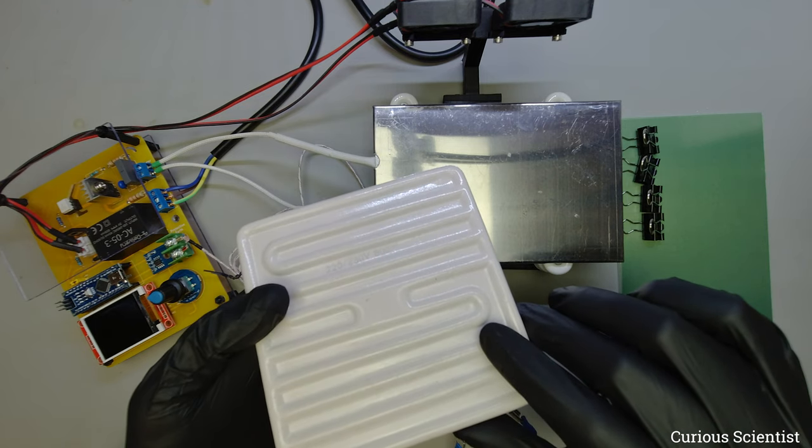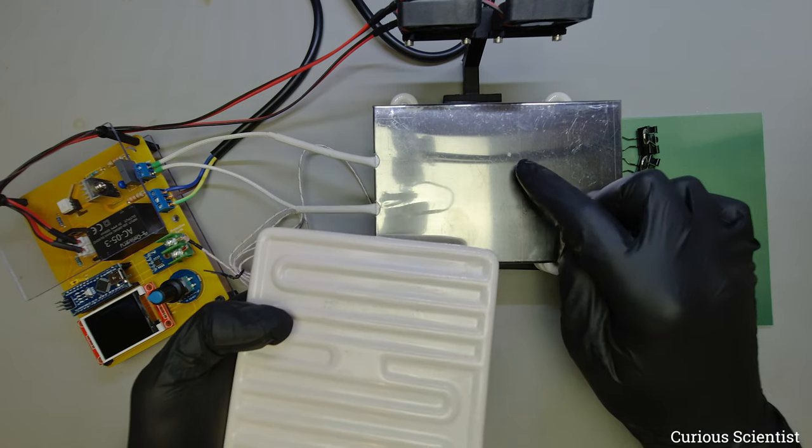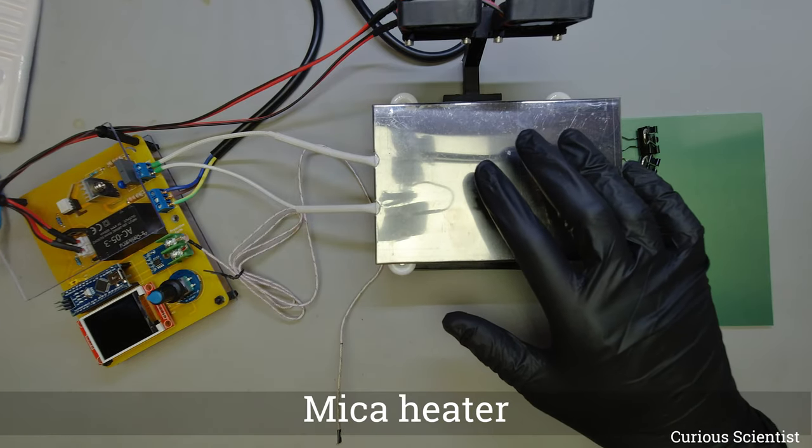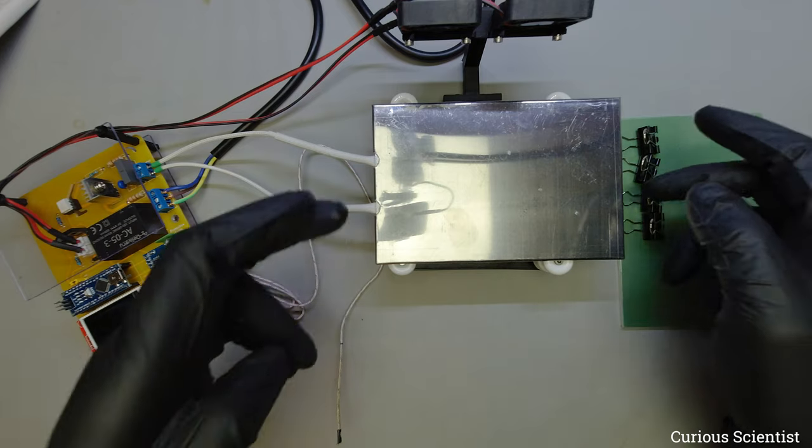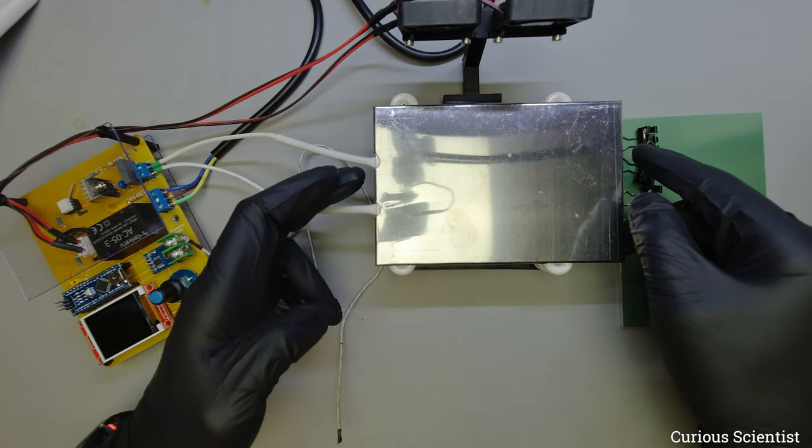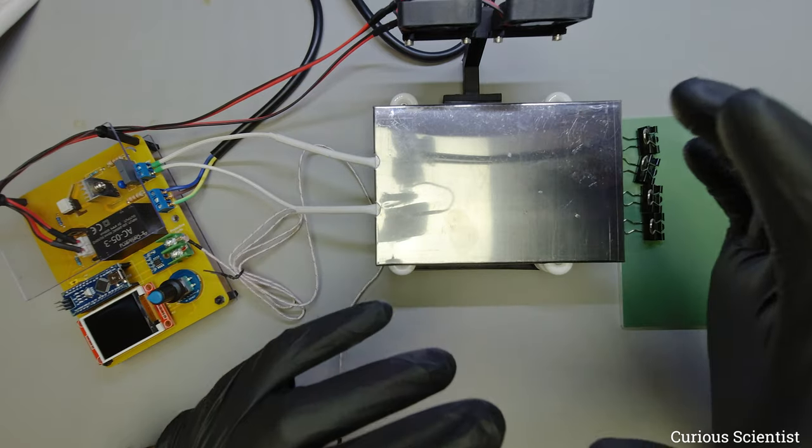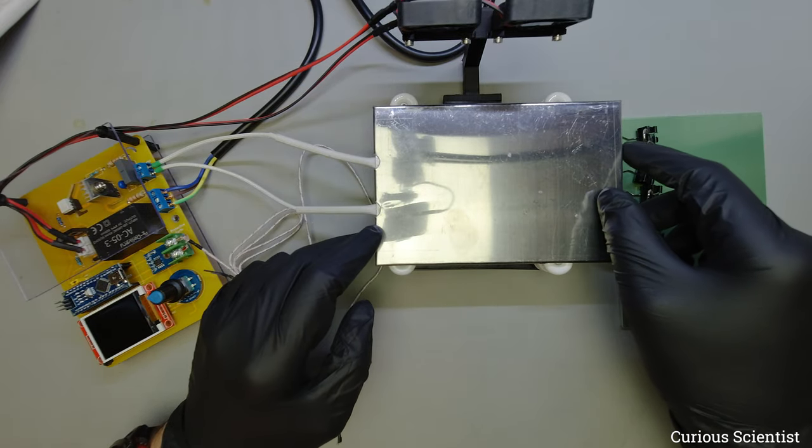So then I came up with the idea that I should use a different kind of heater and that is this mica heater. Actually not the mica which is heating, because of course that's an insulating material, but that insulating material plays a more important role than the heater itself.